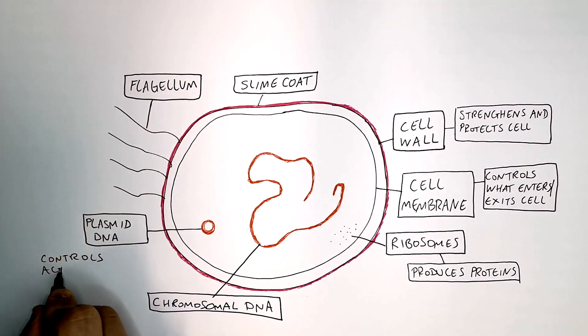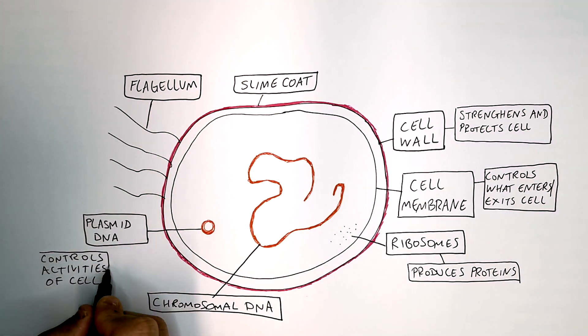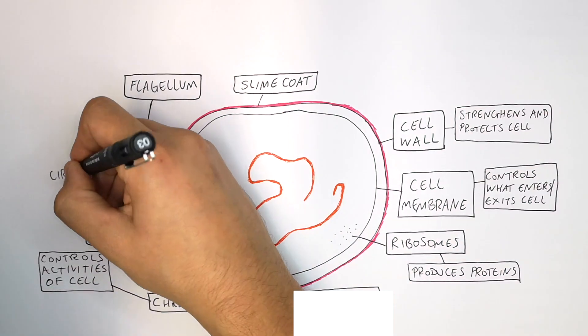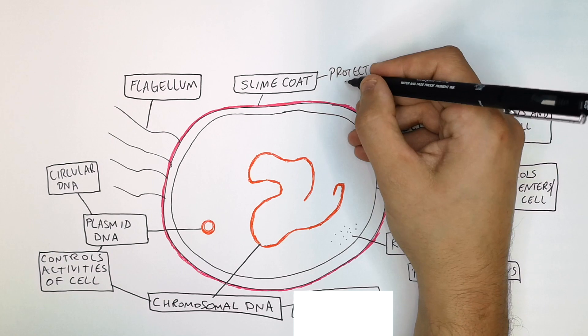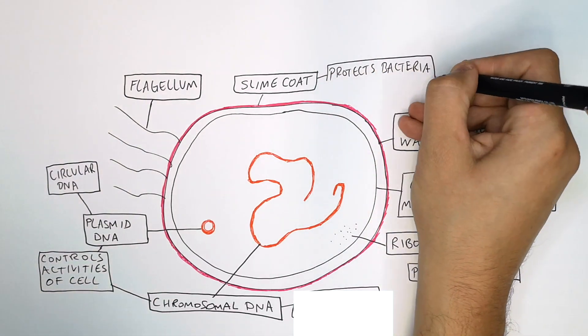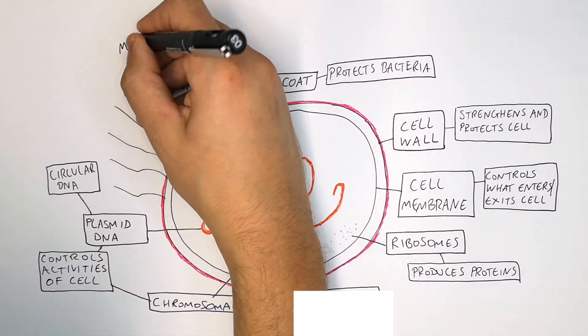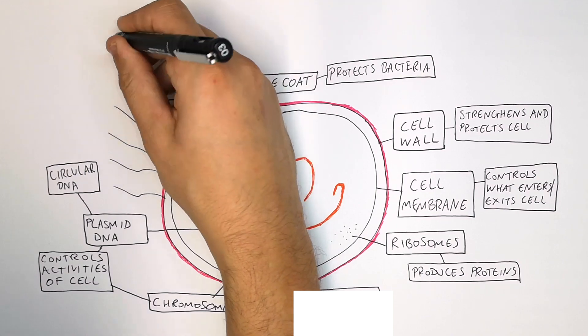Now the plasmid DNA and chromosomal DNA control the activities of the cell. The plasmid DNA is a circular bit of DNA. The slime coat protects the bacteria from the environment it's in, and the flagellum is for movement.